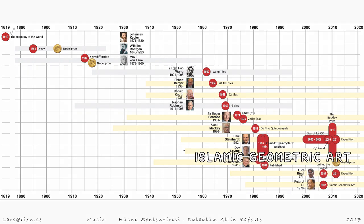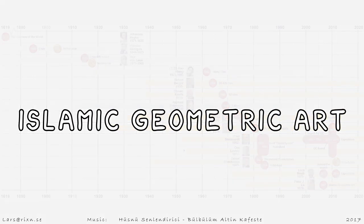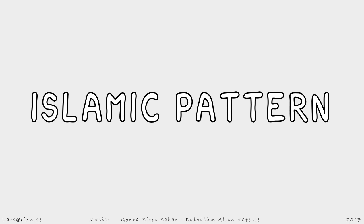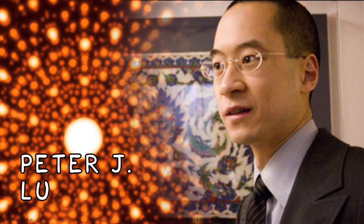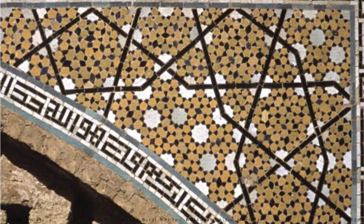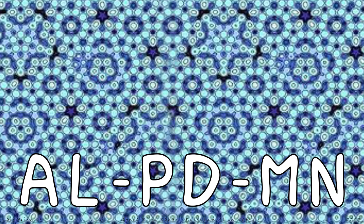And we will end up at Islamic Pattern. Let's go back to 2007, when Peter J. Lu found that many of the artwork in Islamic architecture were quasi-crystalline. It turns out, five-fold patterns were created way before Kepler, in the Middle East.